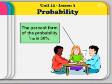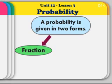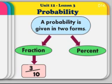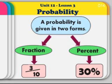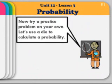The statement is, the percent form of the probability 3 tenths is 30%. If you recall, we stated that a probability is given in two forms. One form is the fraction form. The other form is percent. We found our fraction form to be 3 over 10 or 3 tenths, and we found our percent form to be 30%. So we have our two forms, 3 tenths and 30%.